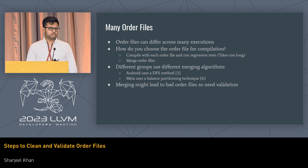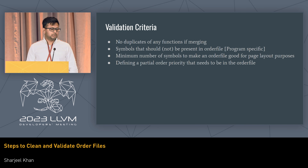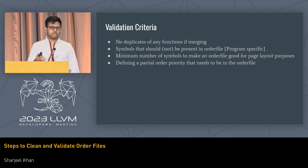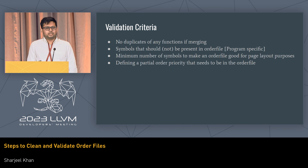They use something called a balanced partitioning technique. But when you're merging order files, how do you ensure the result is good? We try to validate some criteria. Any order file needs to have no duplicates, so we make sure that's satisfied. Some programs or programmers have specific requirements — for example, certain symbols should or shouldn't be included in the order file for security reasons. And sometimes the order file has very few symbols, so it's not even useful.